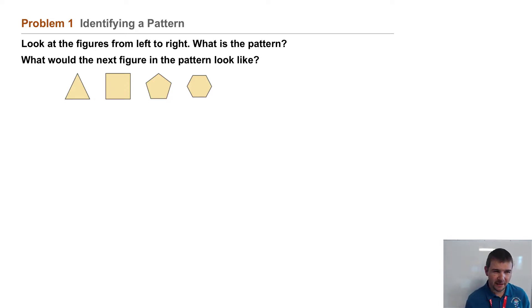Well, consider we have a triangle, then what looks to be a square, it's certainly a rectangle, pentagon, hexagon. It seems to be increasing in the number of sides.